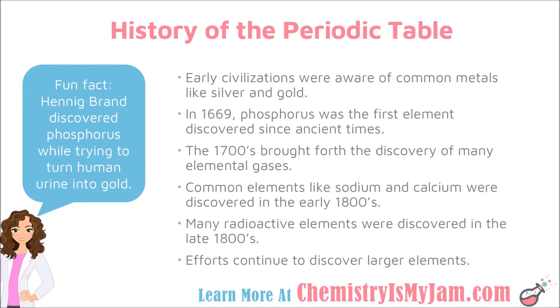Early civilizations were aware of many of the common metals like silver and gold, but there was a large gap in time before new elements began to be discovered. During that time, not much scientific experimentation was taking place. It wasn't until 1669 when phosphorus became the first element since ancient times to be discovered.